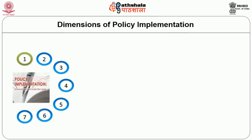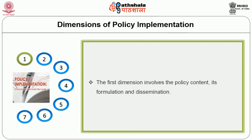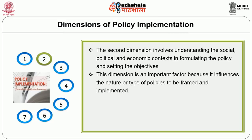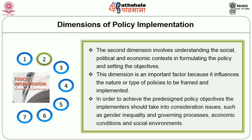There are seven important dimensions in implementation of a public policy, from policy formulation to achievement of end results. The first dimension involves policy content, its formulation and dissemination. The second dimension involves understanding the socio-political and economic contexts in formulating the policy and setting objectives — an important factor influencing the nature of policies to be framed and implemented, including issues such as gender inequality, economic conditions, and social environment.